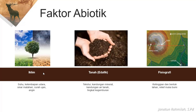Kalau curah hujan, pengaruhnya ke mana? Curah hujan di suatu tempat mempengaruhi karakter khas dari vegetasi yang ada di wilayah tersebut. Ada vegetasi padang rumput, hutan hujan tropis, sabana, dan lainnya. Ini juga mempengaruhi jenis hewan yang ada di wilayah tersebut.